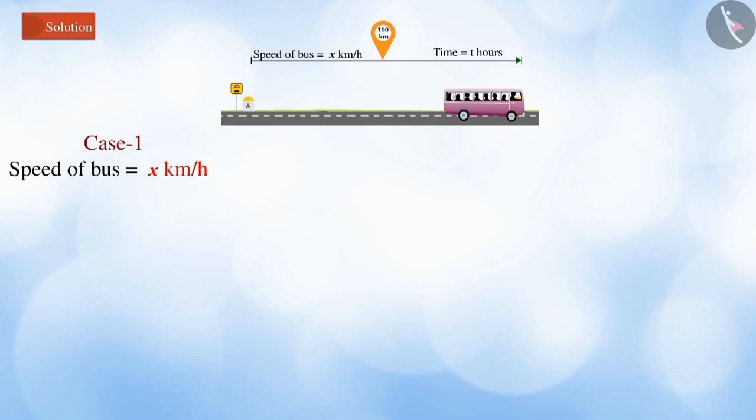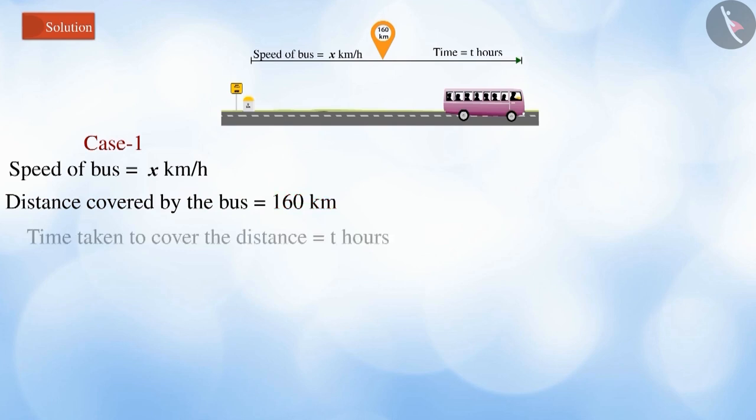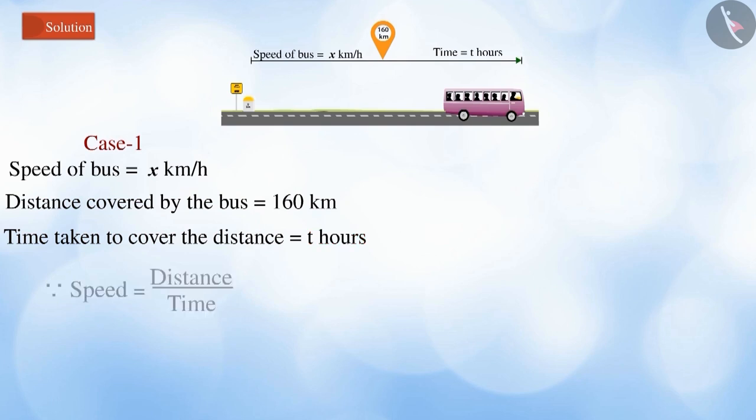Let the speed of the bus be x km per hour. The total distance covered by the bus is 160 km. Let the time taken by the bus to cover the distance be t hours. Since we need to find the equation for speed of the bus, let's represent it in the following manner: Speed x would be equal to 160 by t, or we can write it as t is equal to 160 by x, which is represented by equation 1.